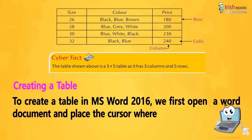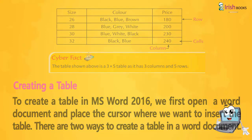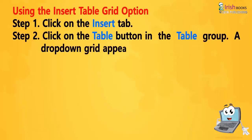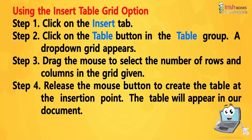Creating a table. To create a table in MS Word 2016, we first open a Word document and place the cursor where we want to insert the table. There are two ways to create a table in a Word document. Using the Insert Table Grid option: Step 1: Click on the Insert tab. Step 2: Click on the Table button in the Tables group. A drop-down grid appears. Step 3: Drag the mouse to select the number of rows and columns in the grid. Step 4: Release the mouse button to create the table at the insertion point. The table will appear in our document.